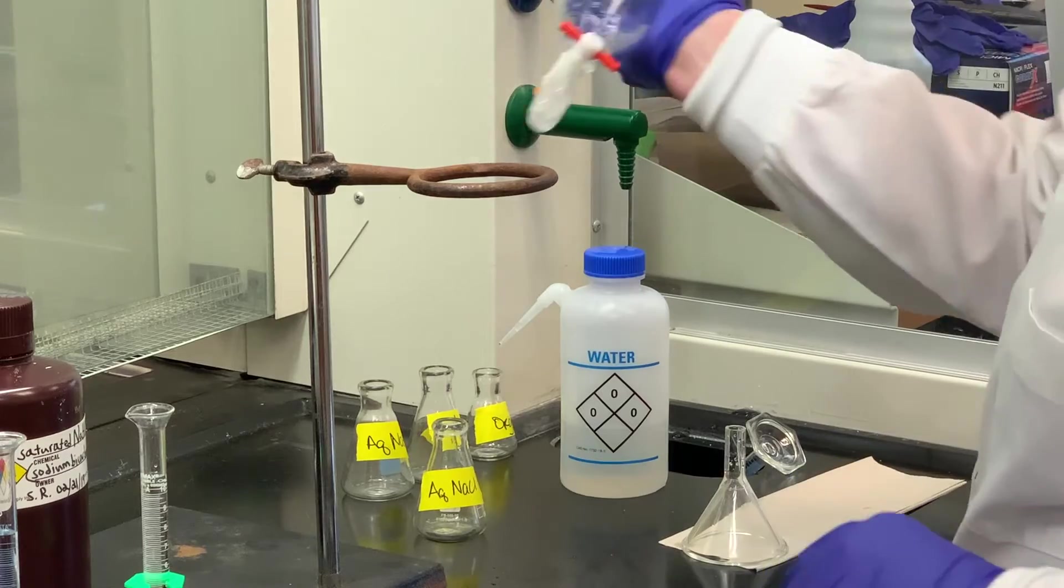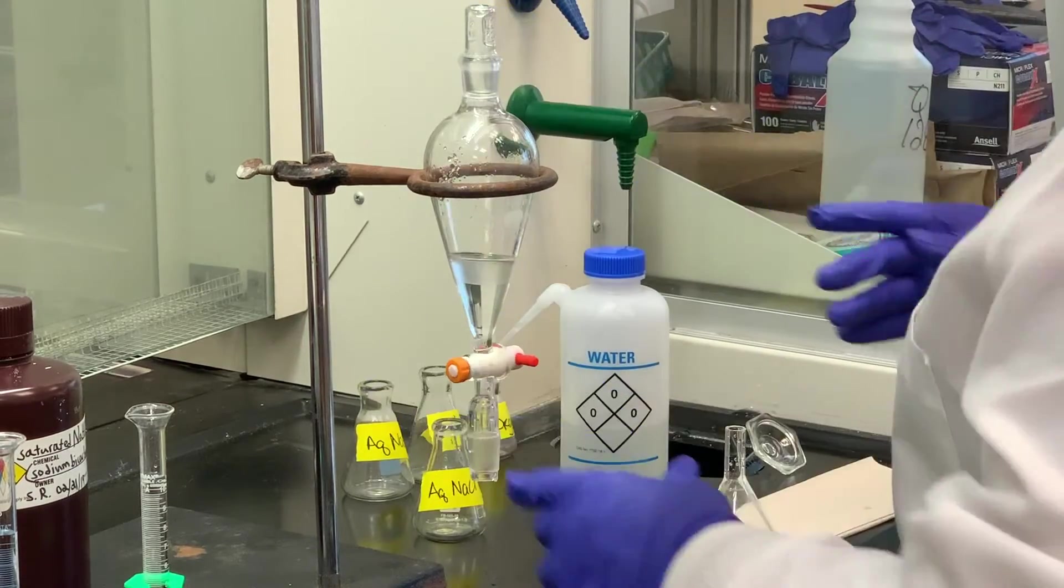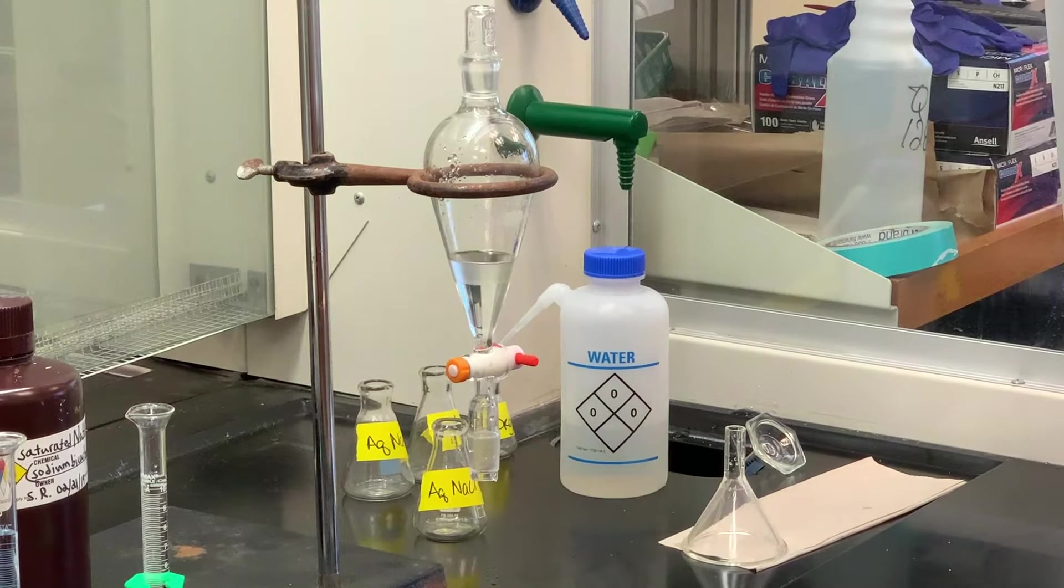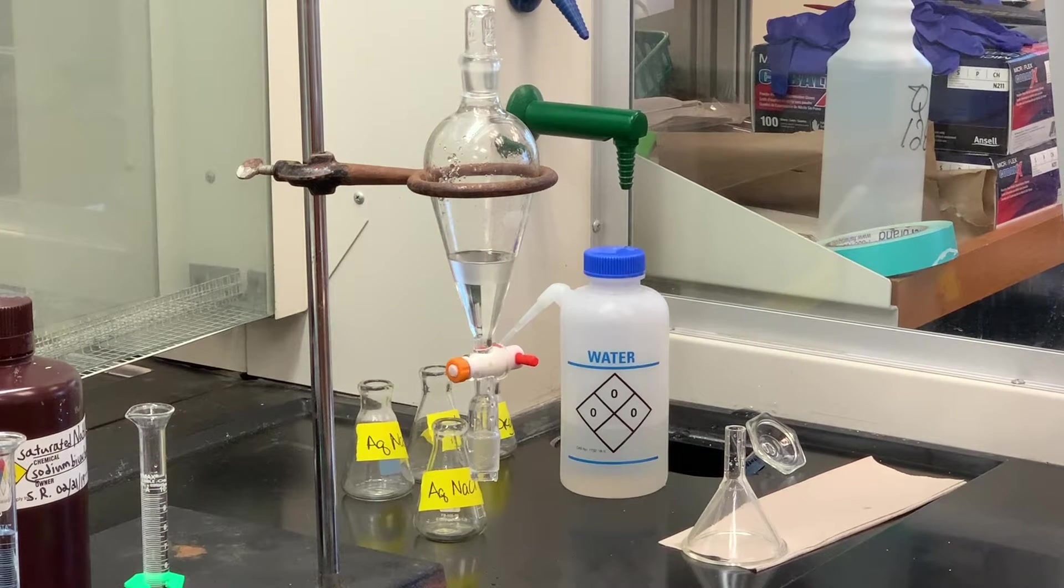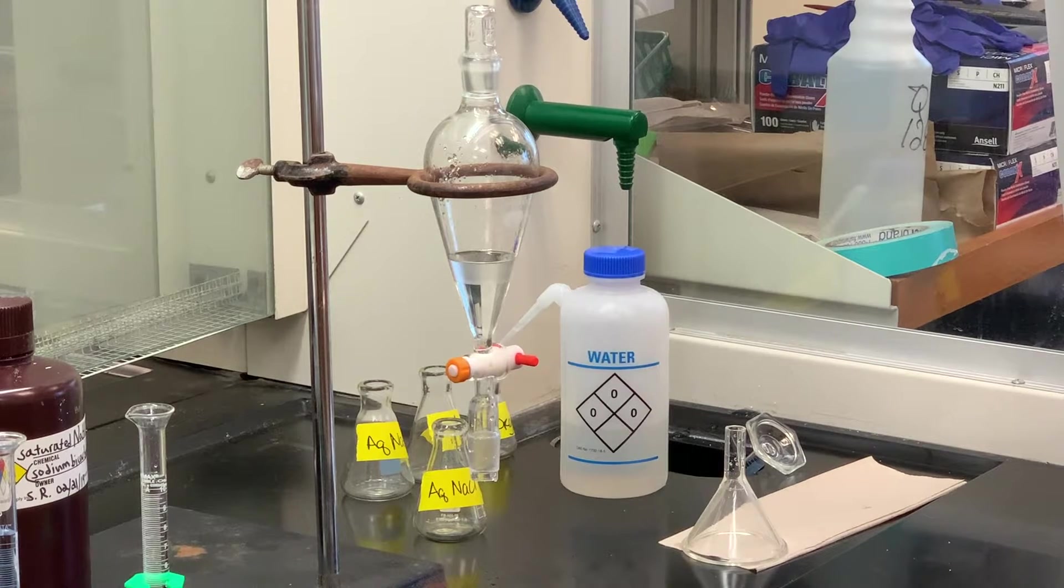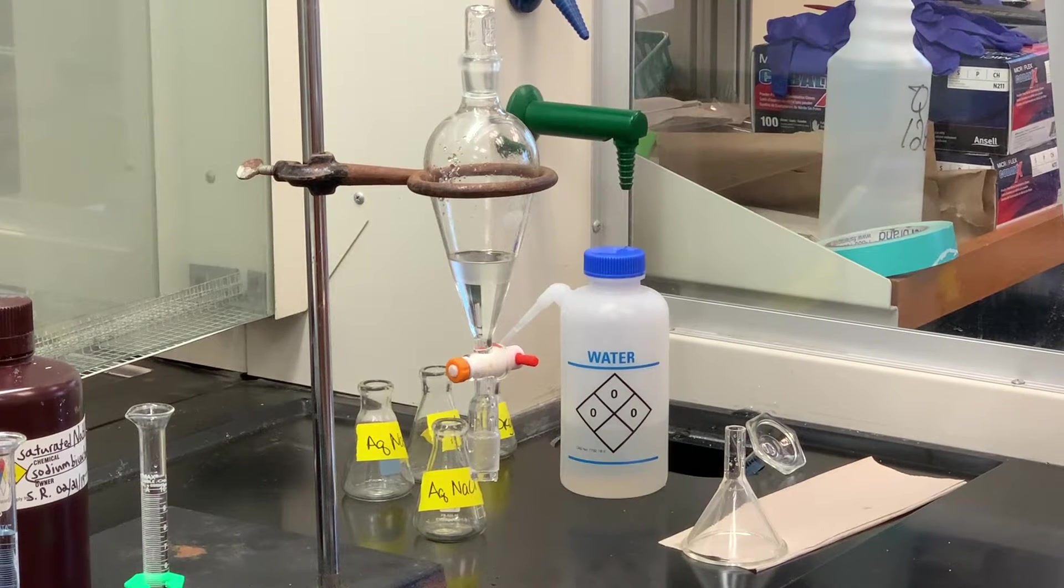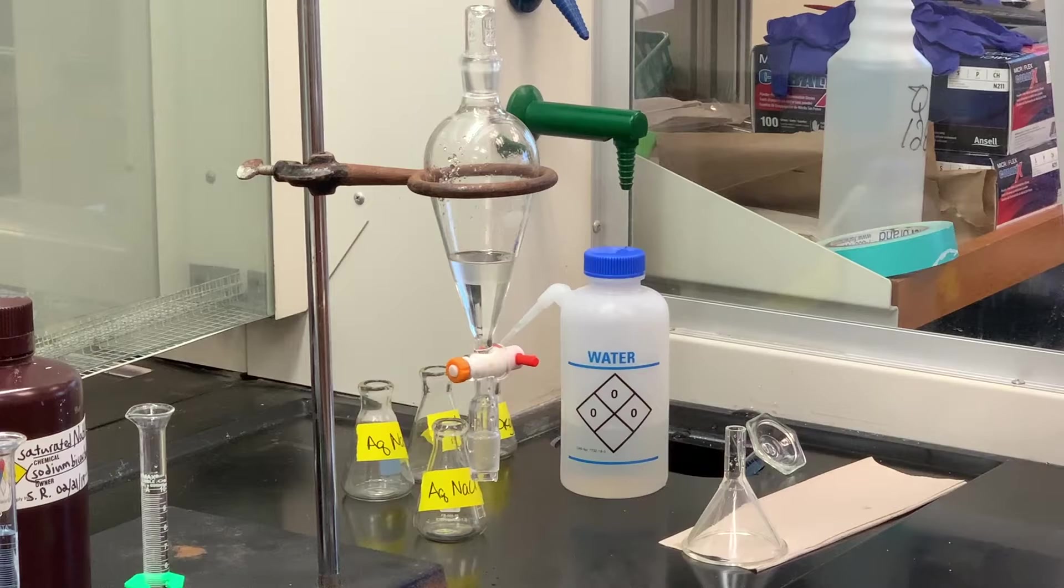All right, we've washed that with our 10 mls of sodium chloride. A lot of times when people use sodium chloride, if there is anything that happens to be still clinging into the organic layer, the sodium chloride is really good to kind of pull it out. So we're going to let that sit a couple minutes just so we get the two defined layers.